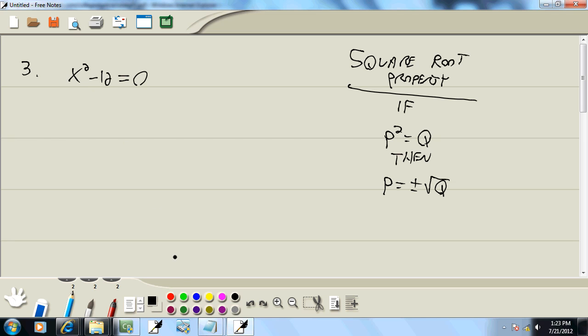So in this particular problem here, I noticed the part that's squared is not by itself. So I'm going to take that negative 12 and move it to the right side. So we've got x squared is equal to 12.